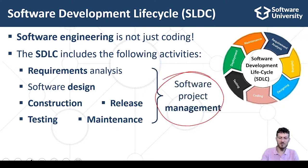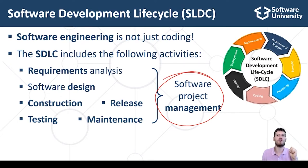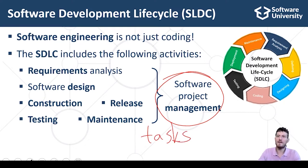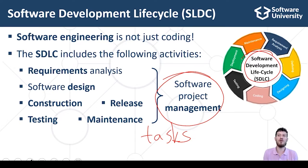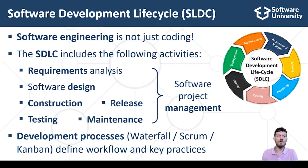Software project management is responsible for the planning, scheduling, resource allocation, execution, tracking and delivery of software projects. Project managers or software team leaders are responsible for defining tasks, prioritizing and scheduling them, tracking progress, and controlling the work during the entire software development lifecycle. Project management is very important for the success of any software project, so it needs experienced people to handle it responsibly.